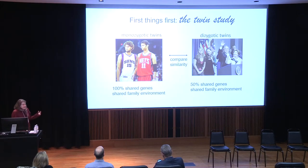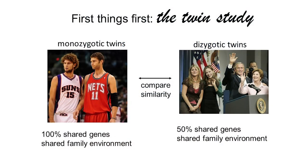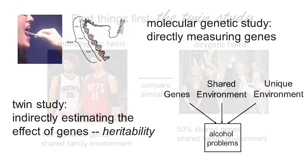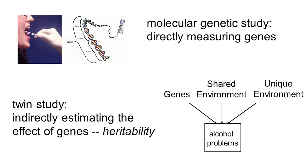I looked at this within a twin study, where you compare the similarity of monozygotic twins who share 100% of their genes to dizygotic twins who share on average 50% of their genes. If the monozygotic twins are more similar than the dizygotic twins, you can infer that there are some genetic influences at play. The twin study is a nice complement to a molecular genetic study — in a molecular genetic study you're directly measuring individual genes, while in a twin study you're indirectly estimating the aggregate influence of genes.